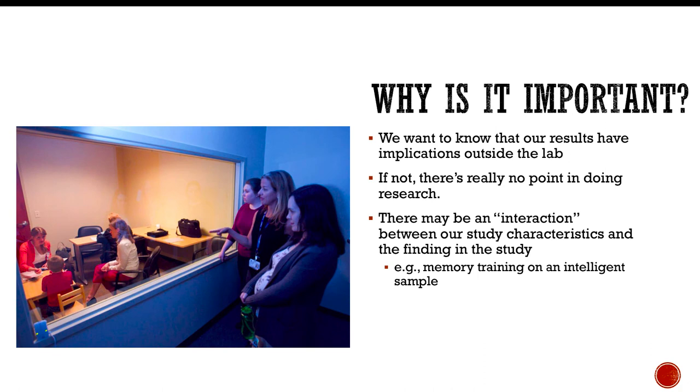For example, you might find, or you might try to say that this training program that I developed makes people smarter, or improves their performance on the class test or something. Well, maybe there's an interaction with intelligence, and it happens to be that your sample is intelligent, and for intelligent people, your training works. For people who aren't so intelligent, the training actually overwhelms them, and hurts their performance. And that's what we're worried about with external validity is, do these things have interaction effects with the characteristics of the sample? And if they do, that's a problem for external validity.